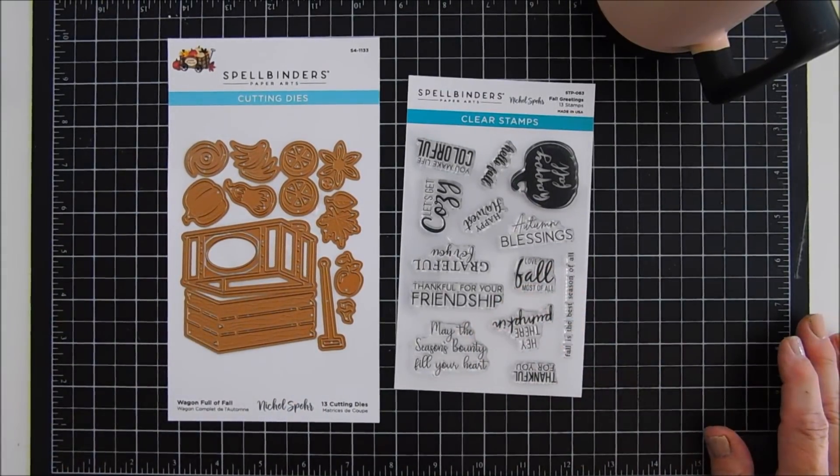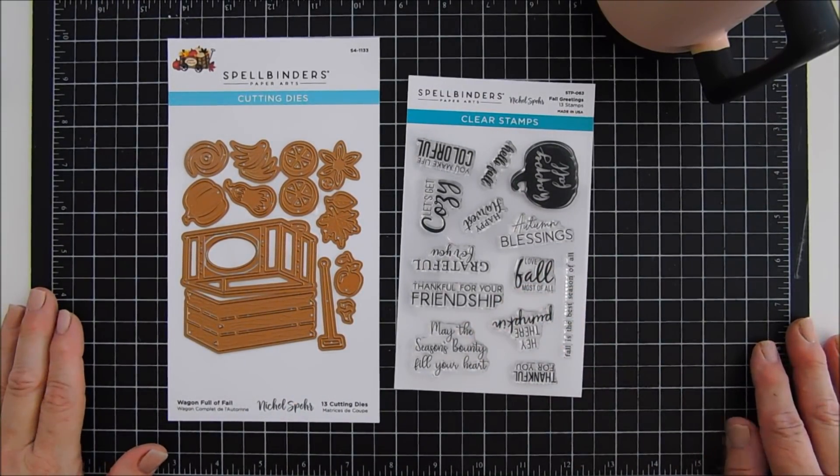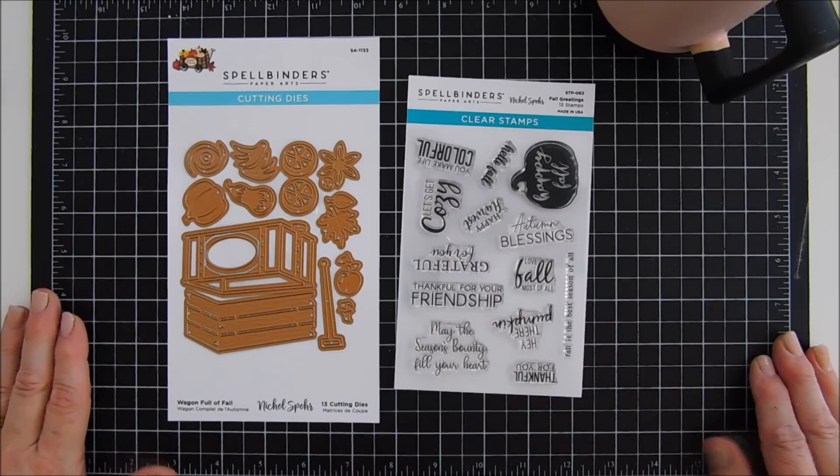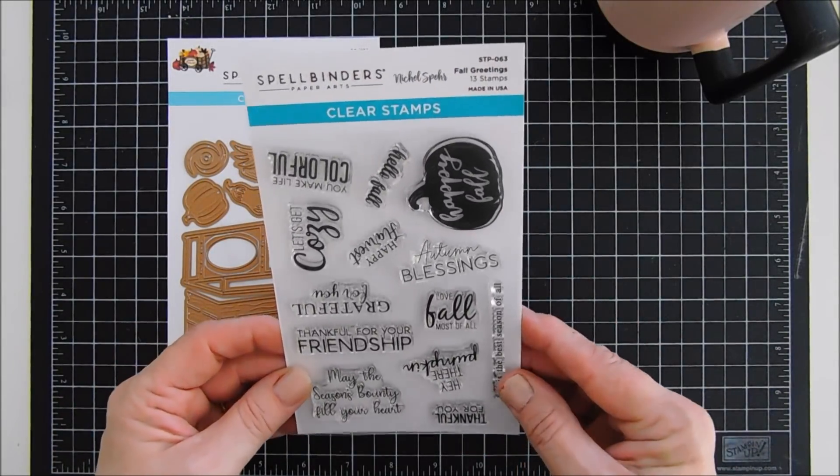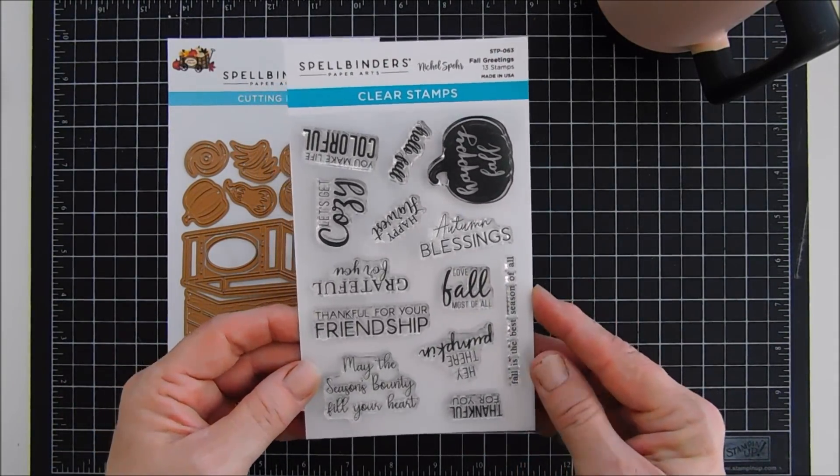It's part of the Happy Harvest collection by Nicole Spohr. There's more to this collection but today I'm going to share a couple cards using two items. The stamp set goes with so many pieces of the collection including the die set.